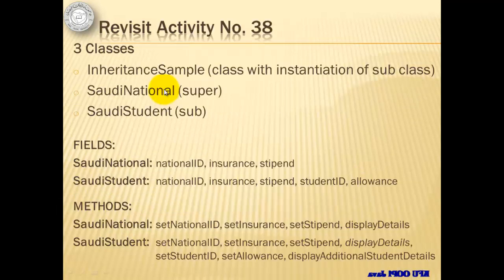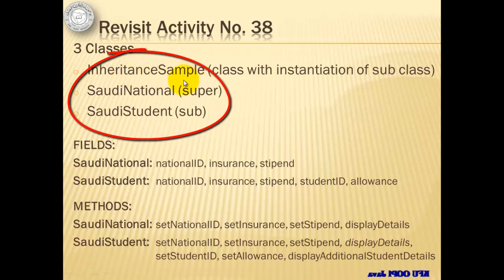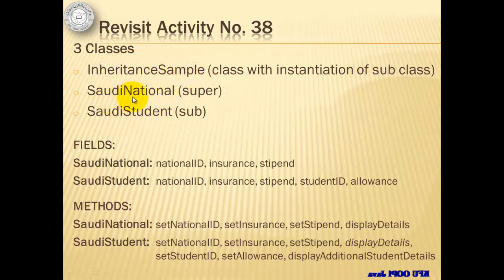Let's revisit activity number 38 from lesson 19. In the Project Inheritance Sample, we have three classes: the Inheritance Sample, the Saudi National, and the Saudi Student. The Saudi National is what we declared as the superclass. The Saudi Student was declared as the subclass. And the Inheritance Sample class is the class where we instantiated the subclass Saudi Student.